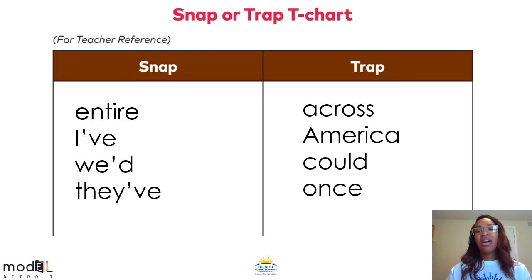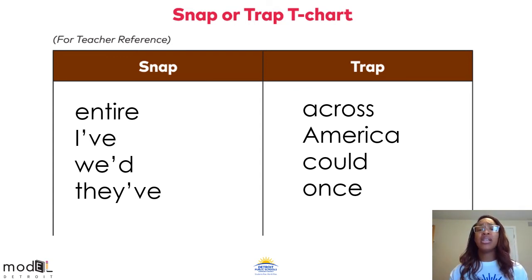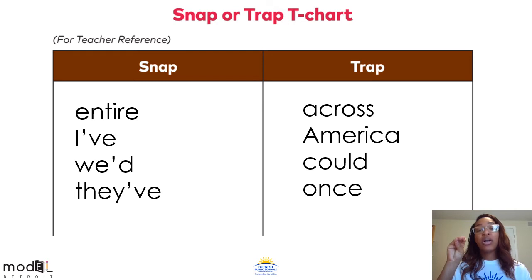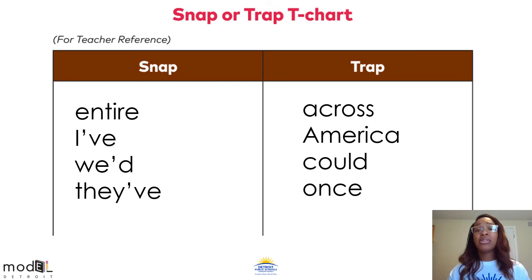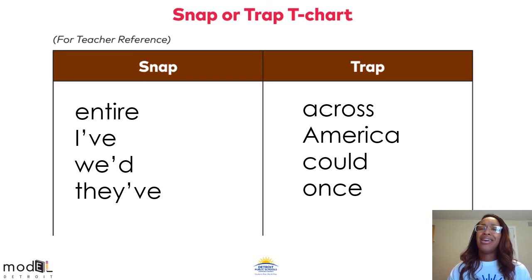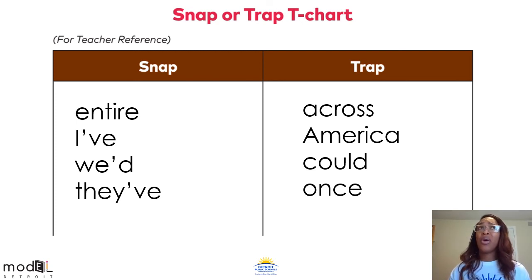I would also say America is a bit of a longer word because there are many syllables — four syllables. The next word, could, gave me a bit of drama because it has a silent L. And it has the vowel team OU, which makes the "uh" sound. A little bit of a trap, especially with that silent L. And the biggest trap of them all is the word once. This word starts with the letter O, but the O makes a W sound. Once starts with a super, super, super trap.